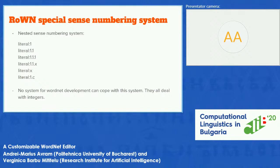The Romanian literals also have special sense numbering where there is a hierarchy of senses. The main sense of the literals is marked by an integer like one; a subsense is marked by a number dot a number; and a sub-subsense is marked by a number dot a number dot a number. We also have two special marks, X and C. The X denotes synsets that don't have a direct translation in the dictionary but their literals exist in Romanian corpora, and dot C marks literals that can exist in multiple synsets, showing that the respective senses can be semantically clustered.